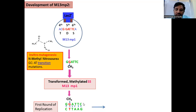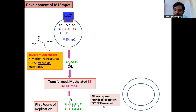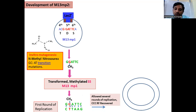In subsequent rounds of replication, the methylated guanine is replaced by adenine. That's what happens during repair — whenever DNA undergoes replication followed by repair, wherever there are mismatched base pairs, they are replaced by correct bases. Here, methylated guanine is base-paired with thymine, and in subsequent replication, the methylated guanine is replaced with adenine. So subsequent replication allows repair, and the methylated guanine is replaced with adenine. Now you can see GAATTC is formed.